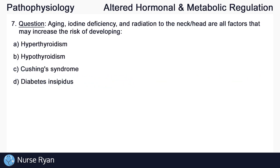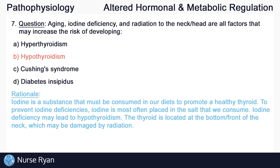Moving on to question number seven: aging, iodine deficiency, and radiation to the neck or head are all factors that may increase the risk of developing — the answer here is B, hypothyroidism. Iodine is a substance that must be consumed in our diets to promote a healthy thyroid. To prevent iodine deficiencies, iodine is most often placed in the salt that we consume. Iodine deficiency may lead to hypothyroidism. The thyroid is located at the bottom front of the neck, which may be damaged by radiation.